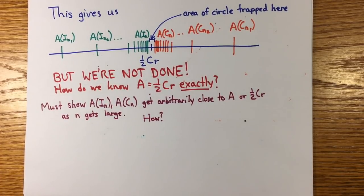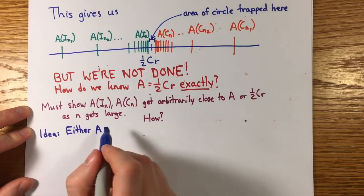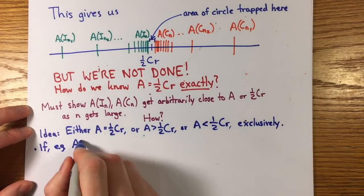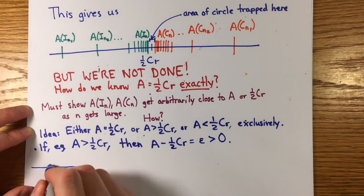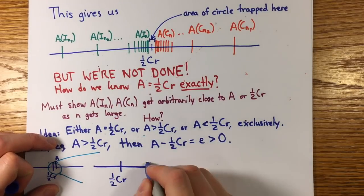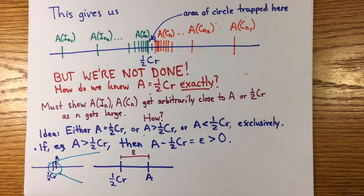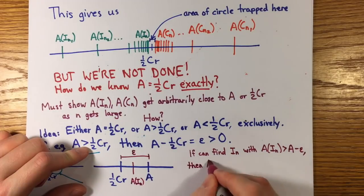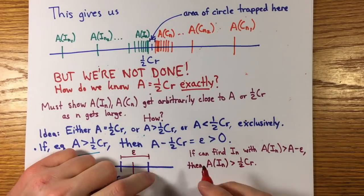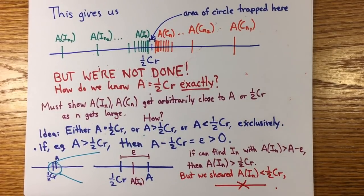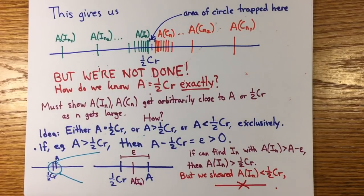So first he noted either A is exactly equal to one half cr or A is greater than one half cr or A is less than one half cr exclusively. And if they're unequal say A is greater than one half cr, then it's greater by some positive amount epsilon. Even if very small, I'll zoom in. Now all we have to do is show we can find some inscribed polygon whose area is closer to A than epsilon because then its area is forced to lie here on the number line. So A of i n is greater than one half cr, but we already showed A of i n is less than one half cr. That's a contradiction and it'll work the same way with circumscribed polygons if we assume the other inequality.